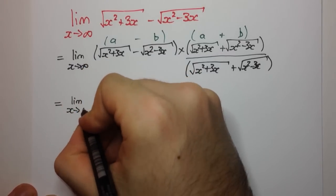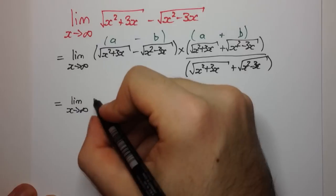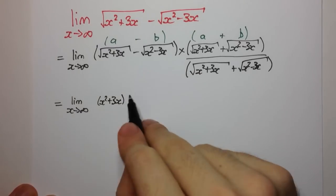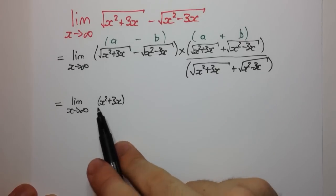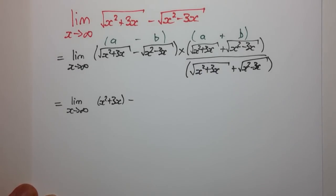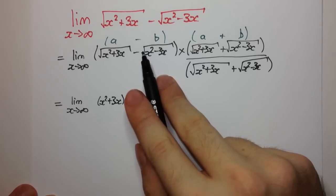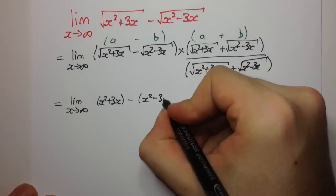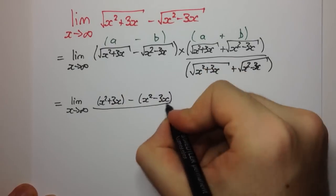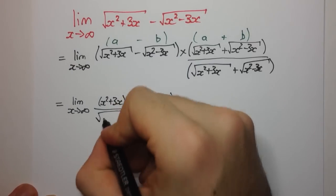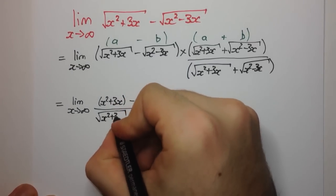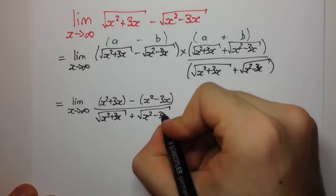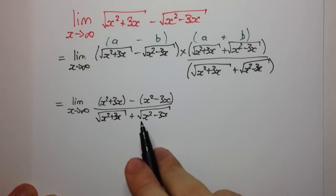So we're going to have a squared, which is going to be x squared plus 3x — the square root squaring it gives just x squared plus 3x — minus b squared, which is this radical squared, so just the inside. And then we divide by these two radicals. Even though we still have some radicals on the bottom, we can deal with those later on.